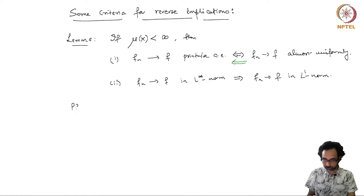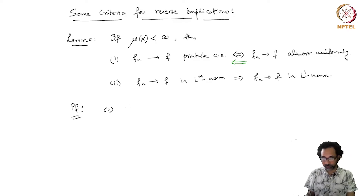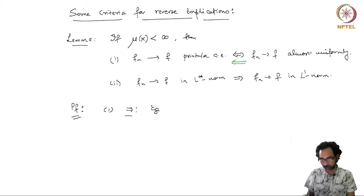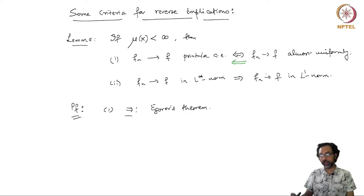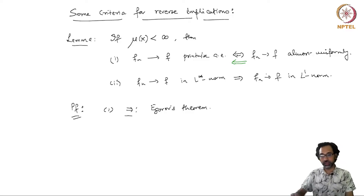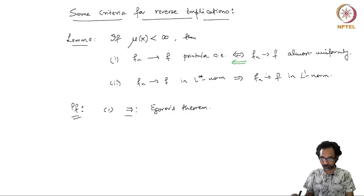This forward implication is precisely the statement of Egorov's theorem that we have seen, which was precisely about almost uniform convergence when you have pointwise almost everywhere convergence.